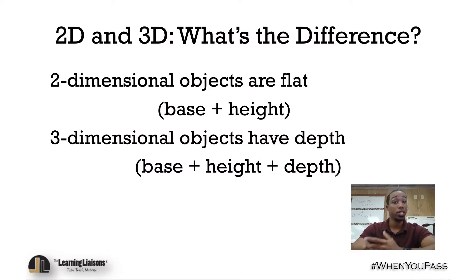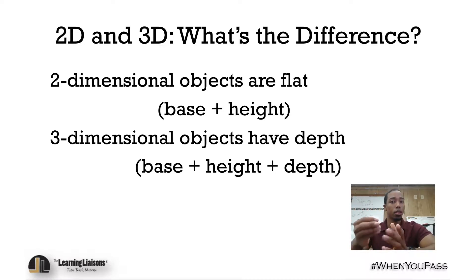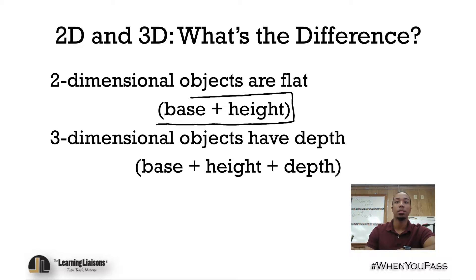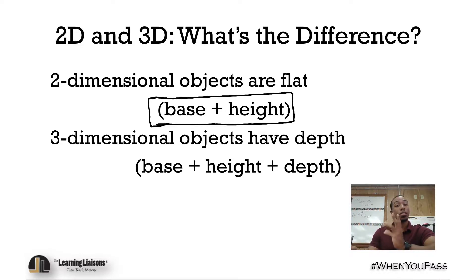Two-dimensional and three-dimensional — what's the difference? Well, it's in their names. Two-dimensional objects are flat; they only have a base and a height, or a length and a width, whichever way you want to say it. Three-dimensional objects have a third dimension: we have a base and a height, but we also have depth.